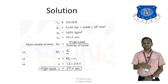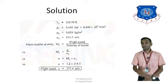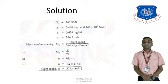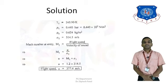From the gas table at elevation Z = 6500 meters, we obtain the properties of air at the inlet: T1 = 245.90 K, P1 = 0.440 bar (i.e., 0.440 × 10⁵ N/m²), density ρ1 = 0.624 kg/m³, and speed of sound A1 = 314.5 m/s.